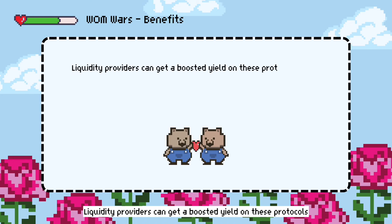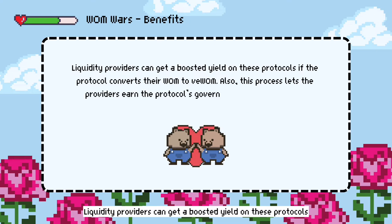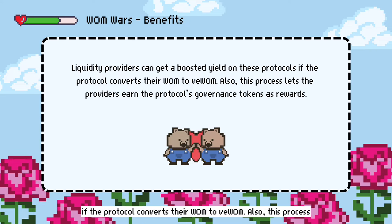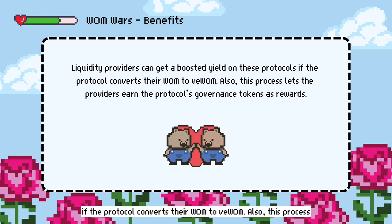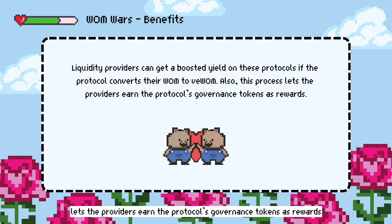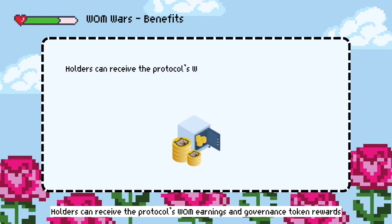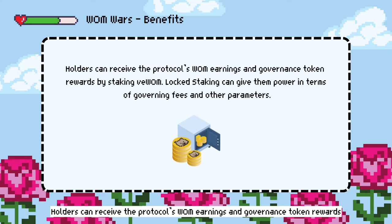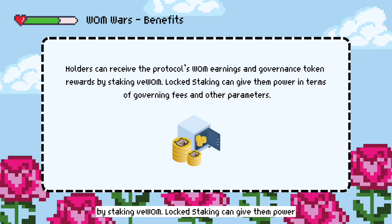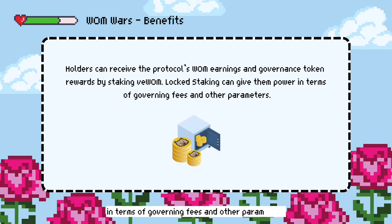Liquidity providers can get a boosted yield on these protocols if the protocol converts their WOM to vWOM. This process also lets providers earn the protocol's governance tokens as rewards. Holders can receive the protocol's WOM earnings and governance token rewards by staking vWOM. Locked staking can give them power in terms of governing fees and other parameters.